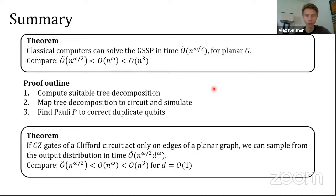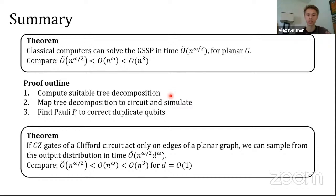To wrap up: the bulk of our work is showing you can solve the graph state simulation problem in time n^(ω/2) for a planar graph — a quadratic improvement on previous Clifford simulation methods. We find a tree decomposition, map it to a circuit, simulate that circuit, and find a Pauli to handle post-selection. The application is that if the controlled-Z gates of a Clifford circuit act only on edges of a planar graph, you can sample from that circuit in time n^(ω/2) times a depth cost — a quadratic improvement for constant-depth circuits.